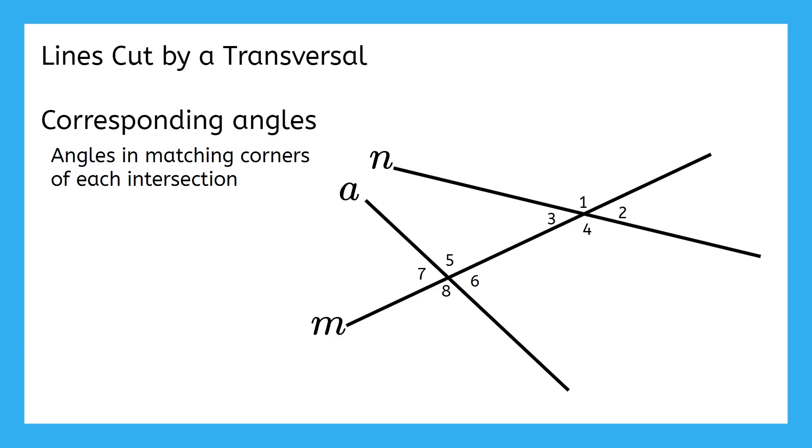Corresponding angles are pairs that sit in the same corner or section of both intersections. Let's try to apply this with angle 8. Can you tell me which angle makes a corresponding pair with angle 8? Did you figure out that angle 8 corresponds with angle 4 because they're both in that sort of bottom corner of the intersection? Try to find the corresponding matches for the rest of the angles. Now check your answers against mine.